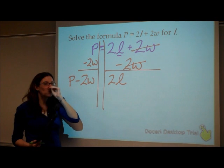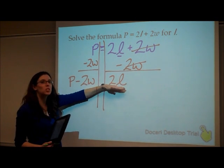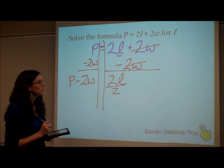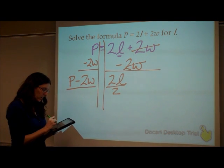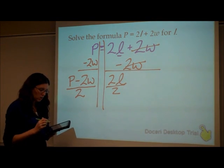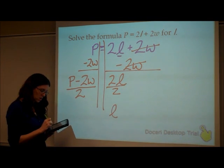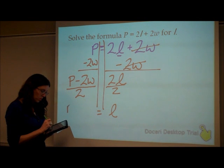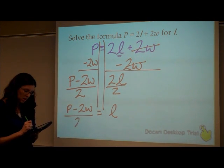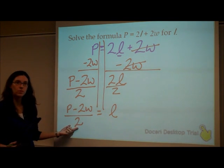So that will leave me with the perimeter minus 2 times the width will equal, over here, I'm left with 2 times the length. I just subtracted 2W from each side. Now, we're similar to what we had last time. I want just the length. It's being multiplied by 2, so I need to divide that by 2. Then over here, I need to divide all of that by 2. So the length is going to be equal to the perimeter minus 2 times the width divided by 2.